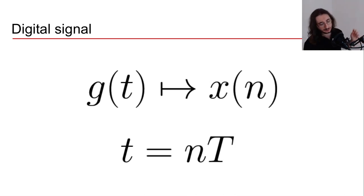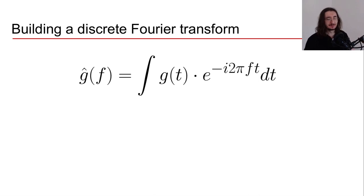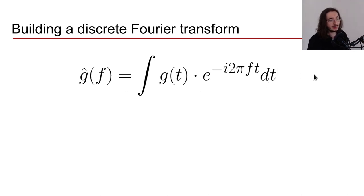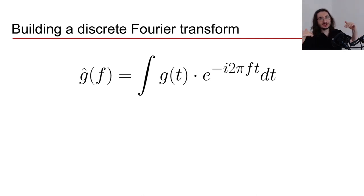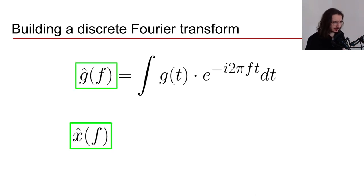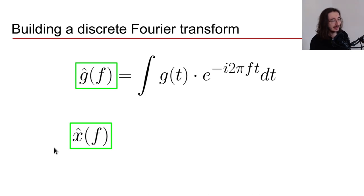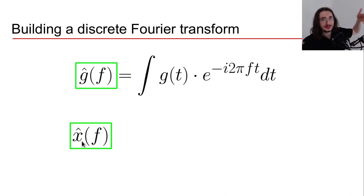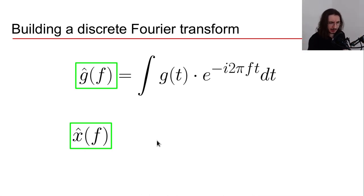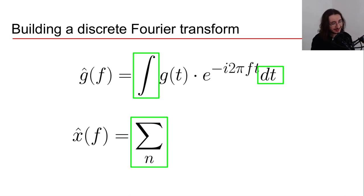This gives us an idea of the transformation needed to move from the continuous Fourier transform to the discrete Fourier transform. Let's now build the DFT starting from the continuous Fourier transform, and see how each element gets mapped onto its discrete counterpart. In the continuous case we call the transform ĝ(f), and in the discrete case we call it x̂(f), using the x convention to indicate we are dealing with samples.